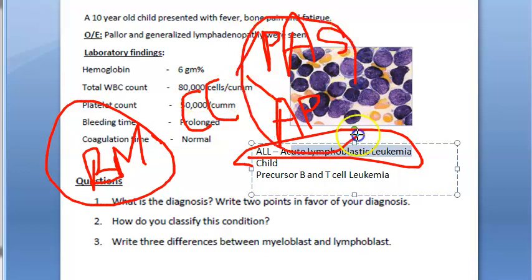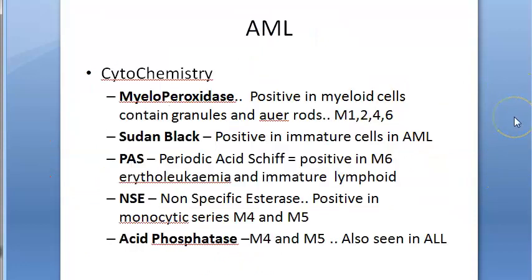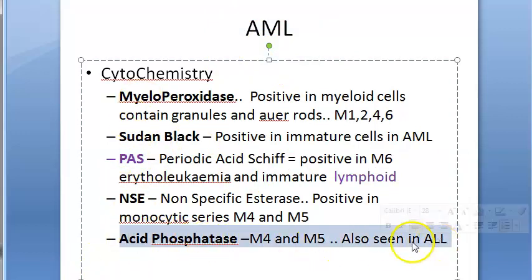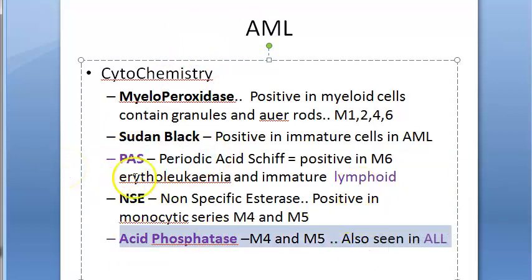In ALL cytochemistry: myeloperoxidase is negative, Sudan black is negative, and non-specific esterase is also negative. Periodic Acid-Schiff (PAS) and acid phosphatase will be positive — these are the stains for lymphoid malignancy.